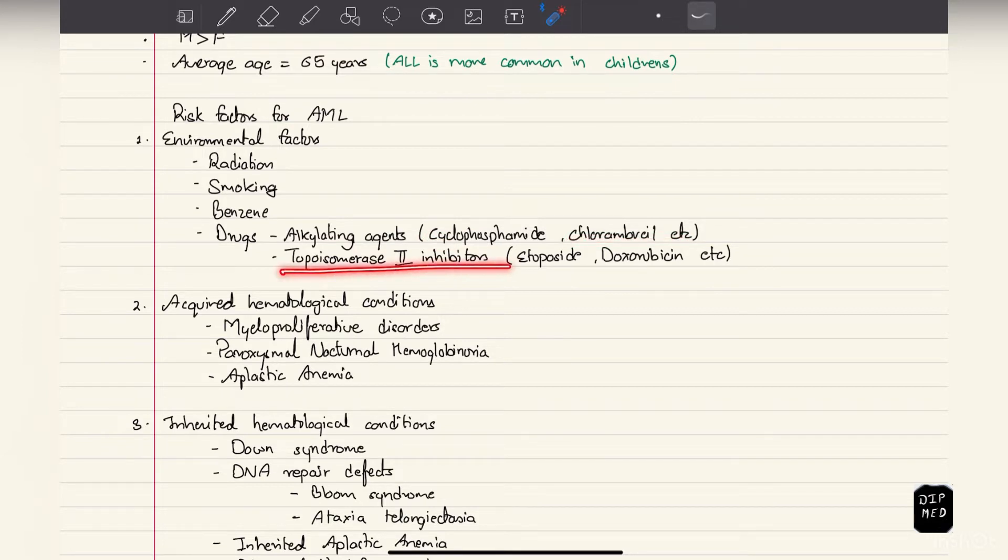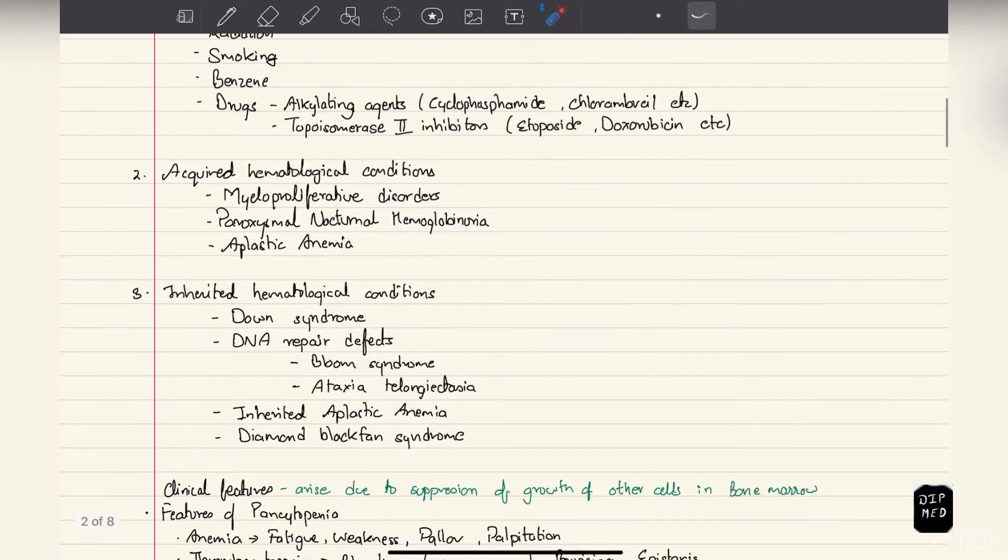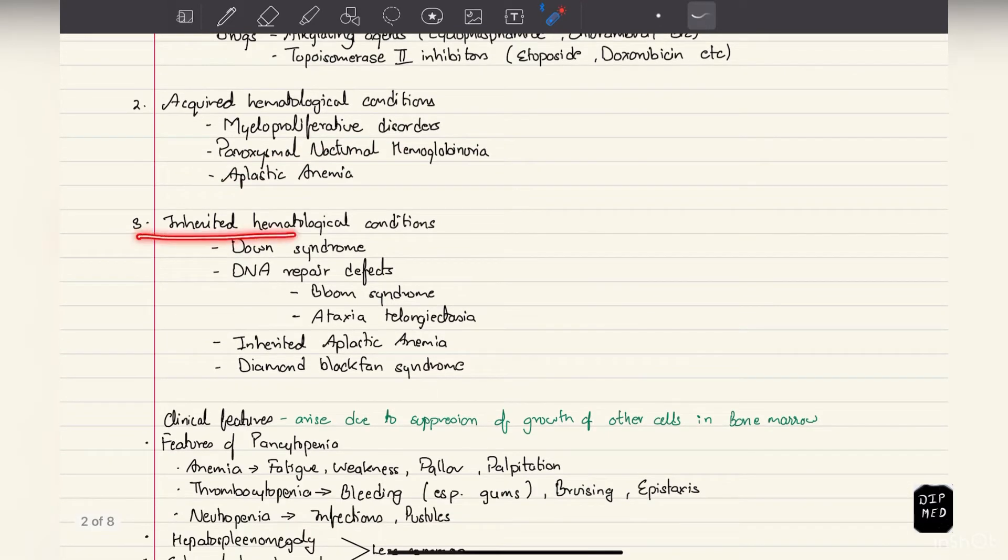Under acquired hematological conditions we have myeloproliferative disorders, paroxysmal nocturnal hemoglobinuria, and aplastic anemia. In inherited hematological conditions we have Down syndrome, DNA repair defects such as Bloom syndrome, ataxia telangiectasia, inherited aplastic anemia, and Diamond-Blackfan syndrome.